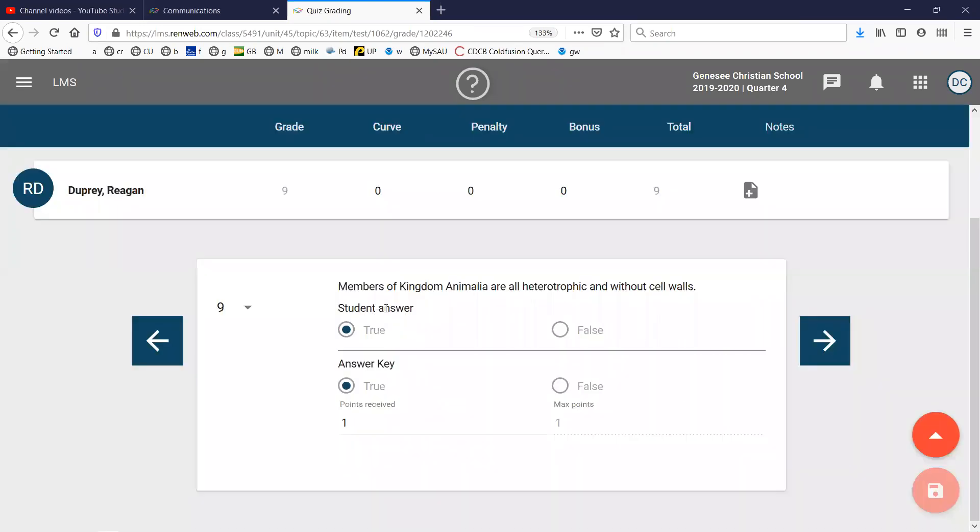Members of kingdom animalia are all heterotrophic without cell walls. That is true. And that's the last question. So there you go. That's last Friday's quiz. There's a quiz out there right now. But get that done by 3 o'clock.